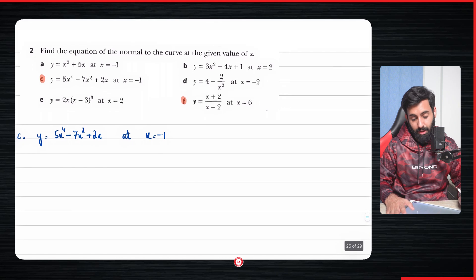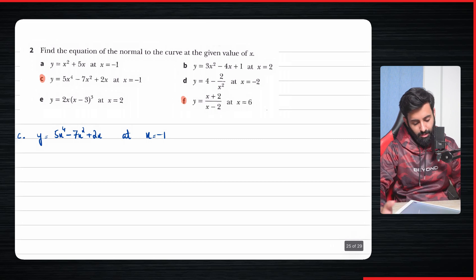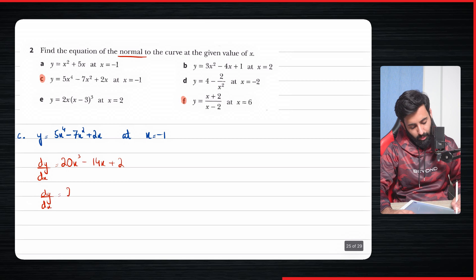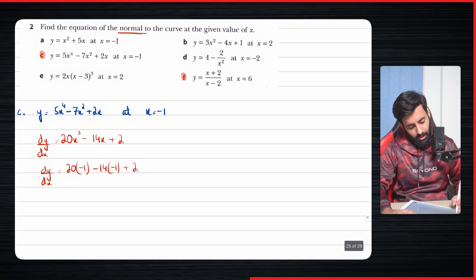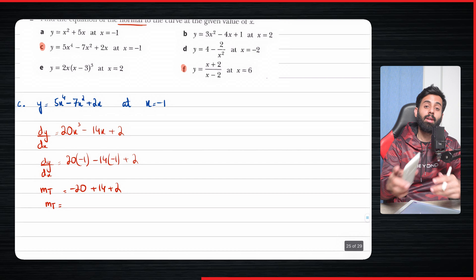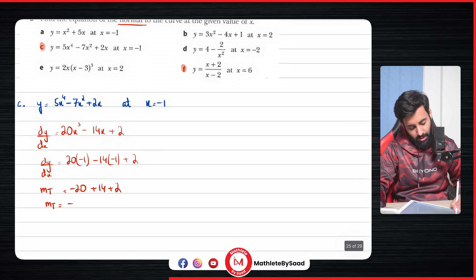Now we have questions where we're supposed to find the equation of the normal. Let's first find dy/dx, which is going to be 20x³ minus 14x plus two. Now plug in the value of x, which is minus one. So 20 times (−1)³ remains minus one; minus 14 into minus one plus two gives: minus 20 plus 14 plus two. Bear in mind, once you simplify this, you get the gradient of tangent, and you need the gradient of normal. Minus 20 plus 14 plus two equals minus four.